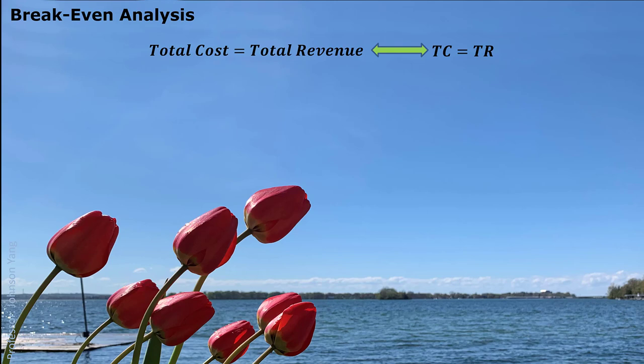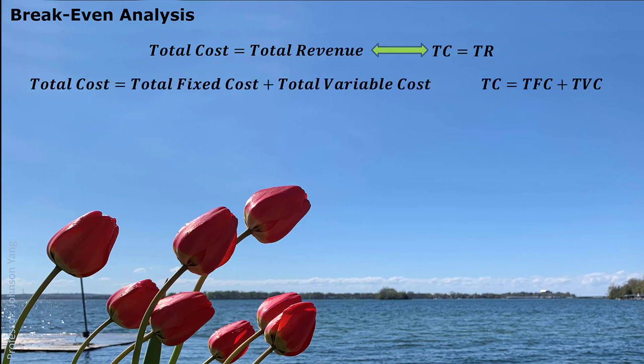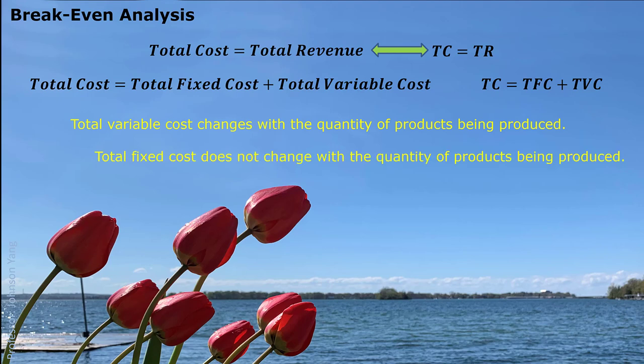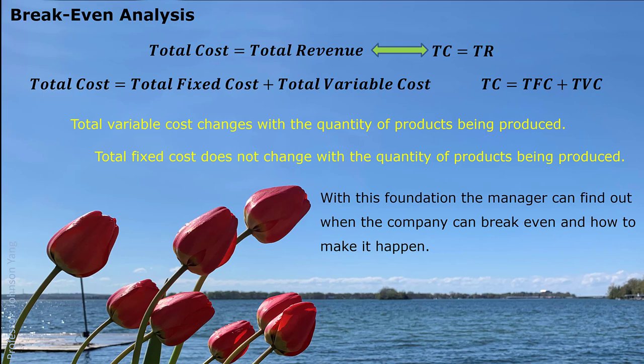So that's what we call the break-even. To understand this part, we have to separate the cost. We have two basic classifications: variable cost and fixed cost. Variable cost changes with the quantity of products being produced, but fixed cost does not change with the quantity of products being produced. With this understanding, it will help us understand when the company can break even and how to make it happen.